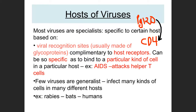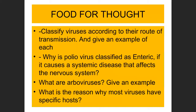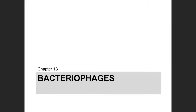Very few viruses are generalists capable of infecting more than one type of host. One example is the rabies virus, which can infect many different types of mammals. However, even rabies stays within mammals — it does not infect reptiles or other non-mammalian hosts.